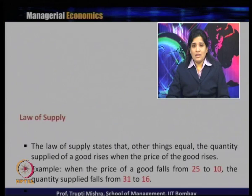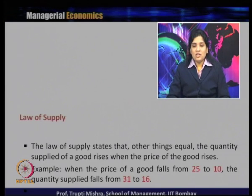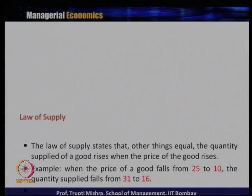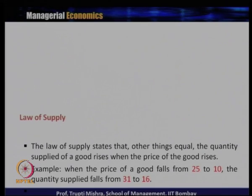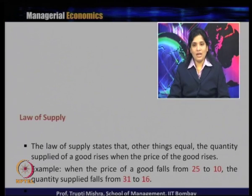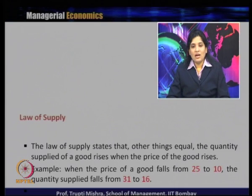The logic is clear: if the price is more, the seller will sell more in the market because they get more profit. If price is low, they will prefer to sell less because they are not getting more profit. For example, when the price decreases from 25 rupees to 10 rupees, the quantity supplied decreases from 31 units to 16 units. When price is 25, quantity supplied is 31; when price is 10, quantity supplied is 16 - consistent with the law of supply that price and quantity supplied are positively related.